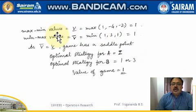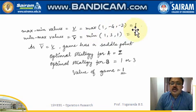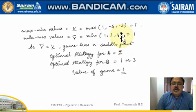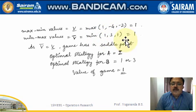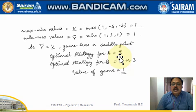Taking the maximin value and minimax value: among all the row minimum values, taking the maximum gives us 1. Among all the column maximum values, taking the minimum — that is the minimax for player B — also gives 1. Since maximin equals minimax, we say the game has a saddle point. The value of the game is 1.